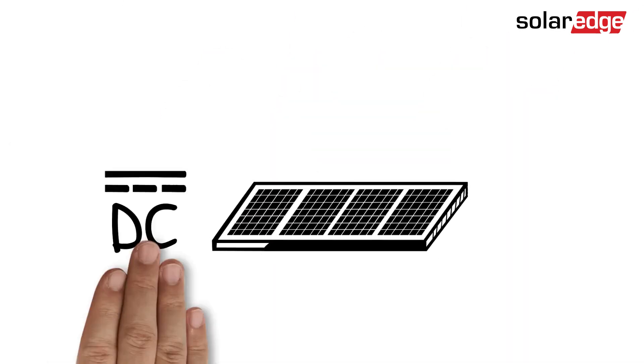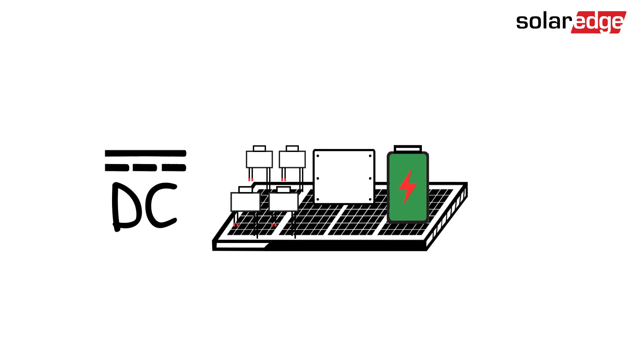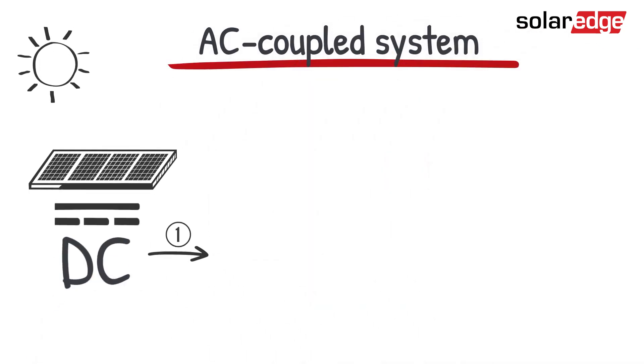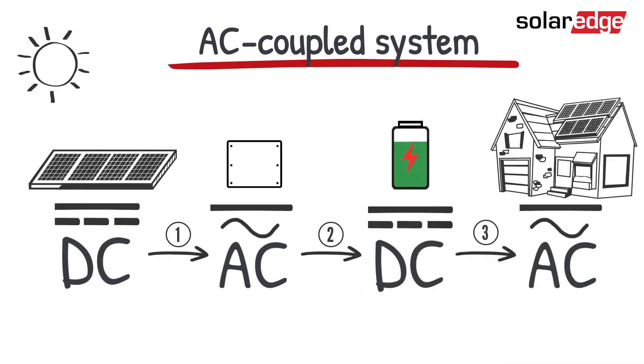PV modules generate DC electricity, and batteries store energy as DC electricity, so it makes sense that the rest of the battery storage system also works on DC electricity. In an AC coupled battery system, the DC energy from the PV modules is converted to AC and then back to DC when stored on the battery, then back again to AC for home use.